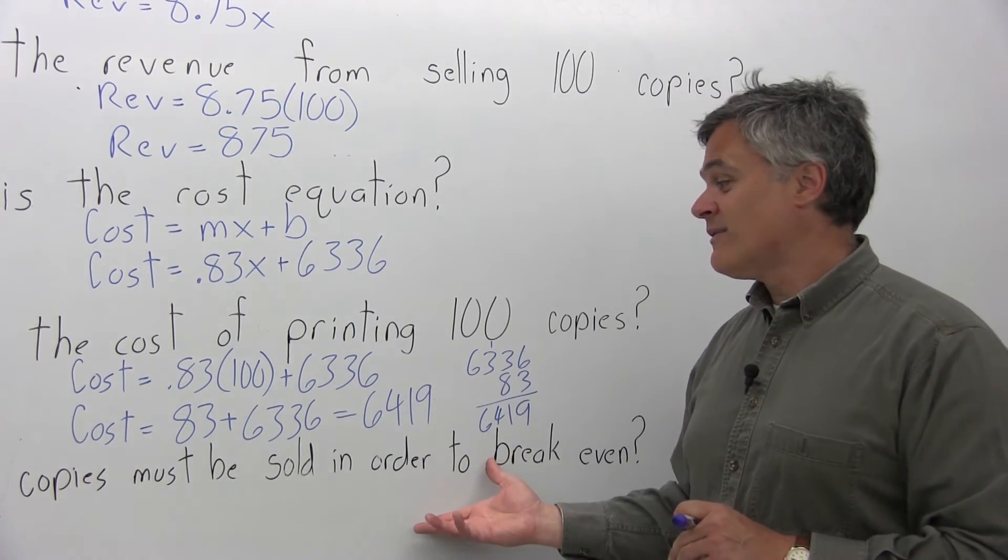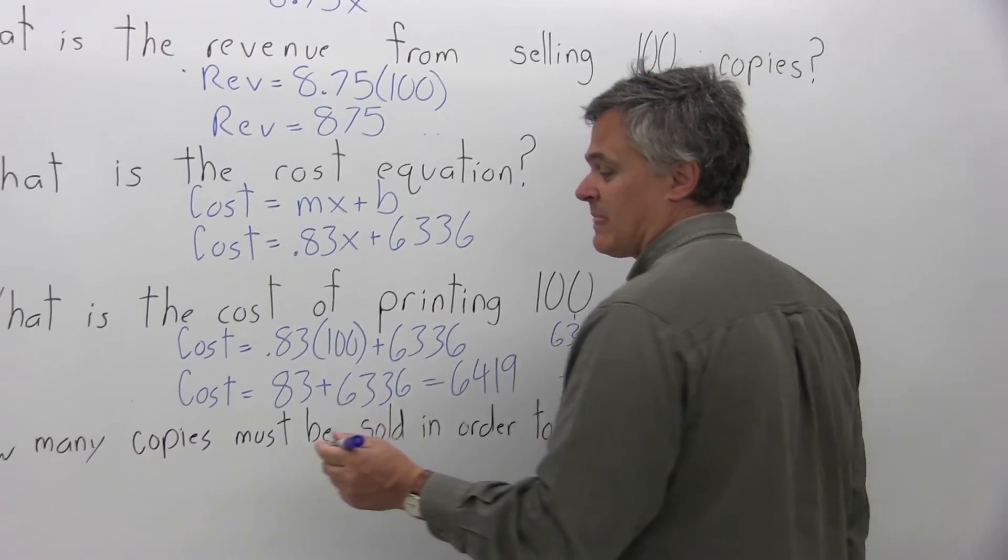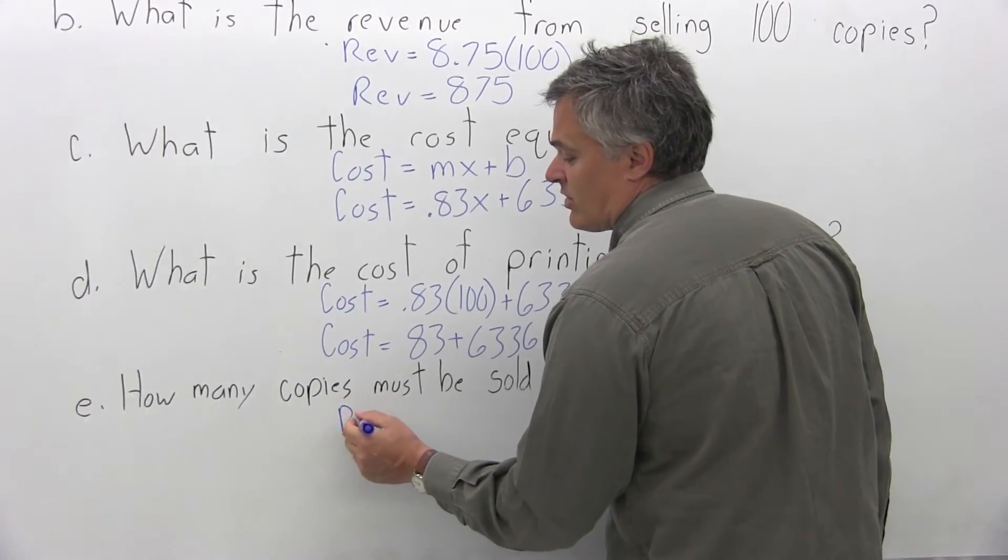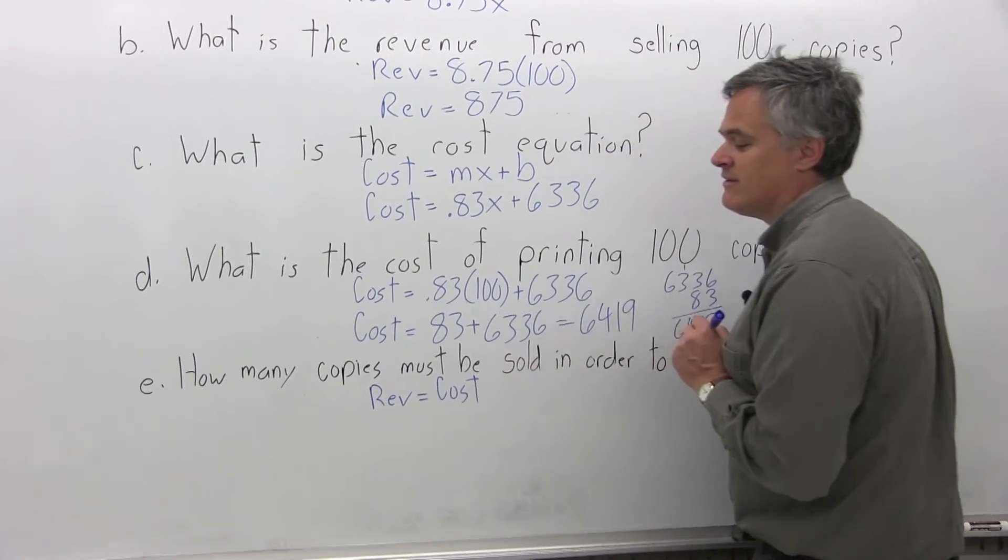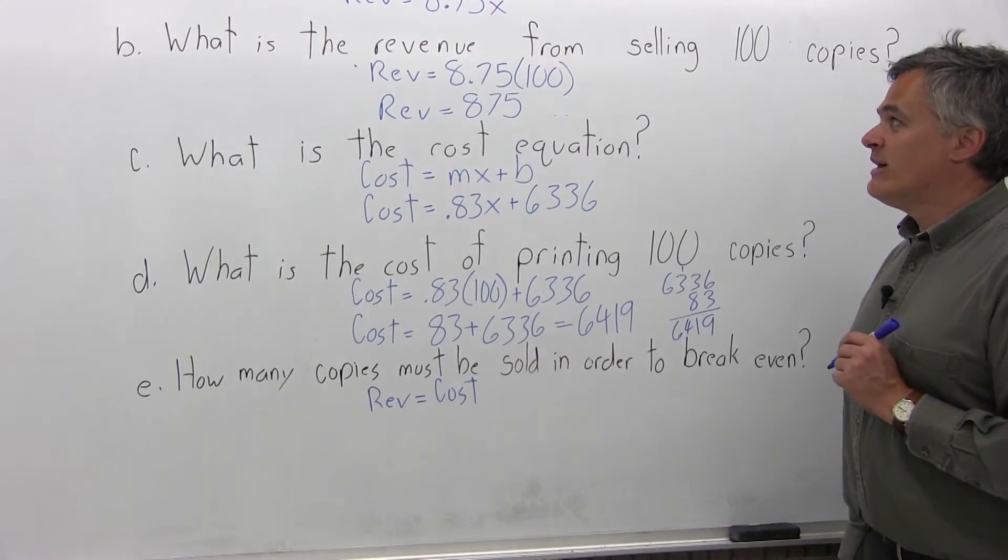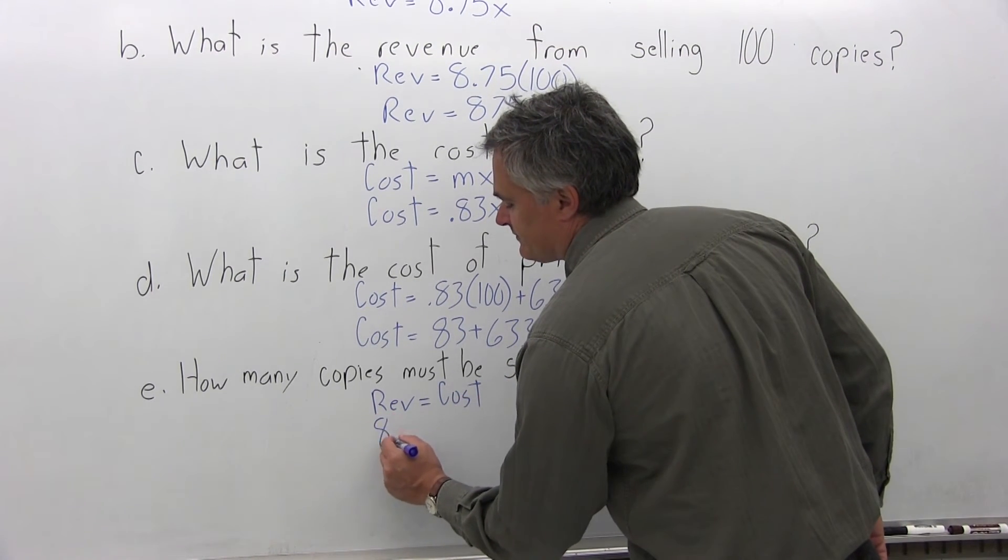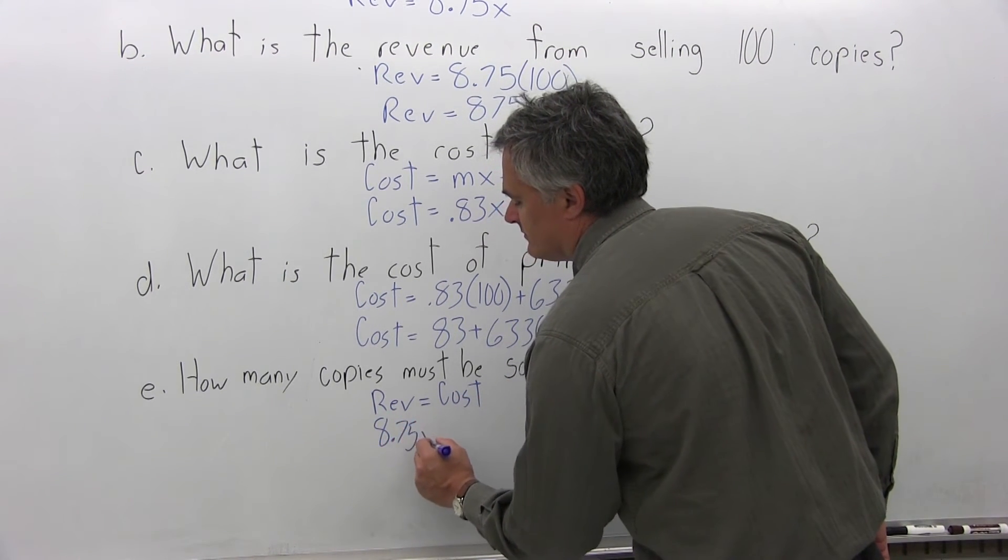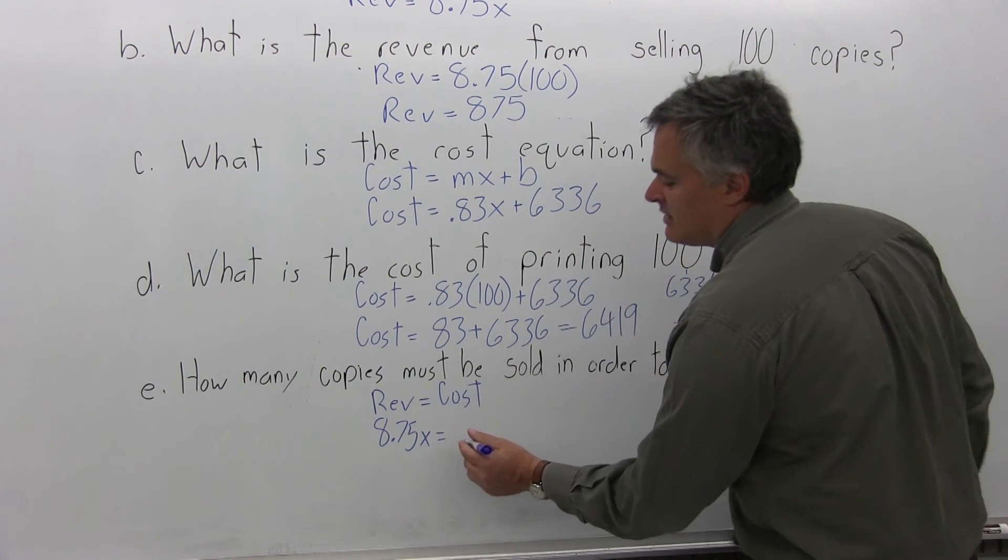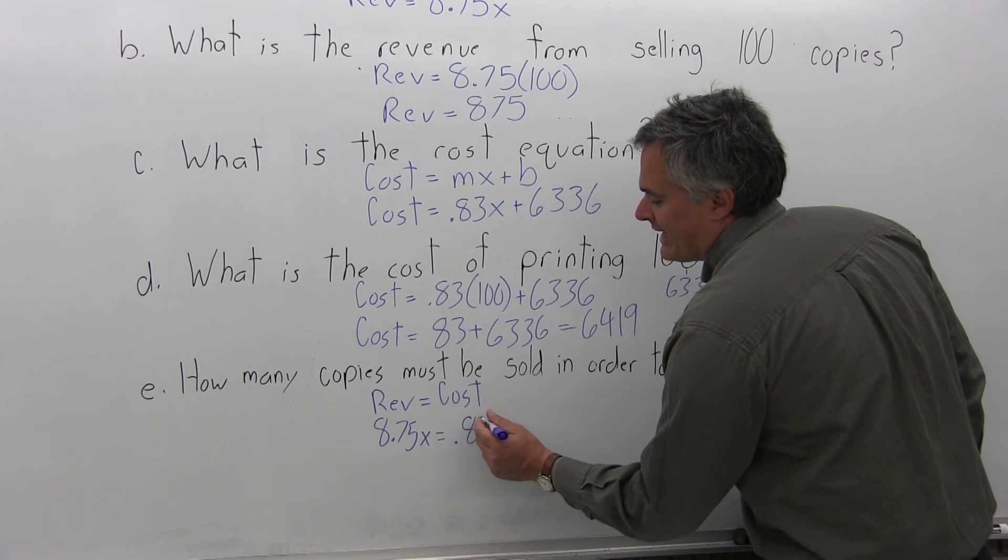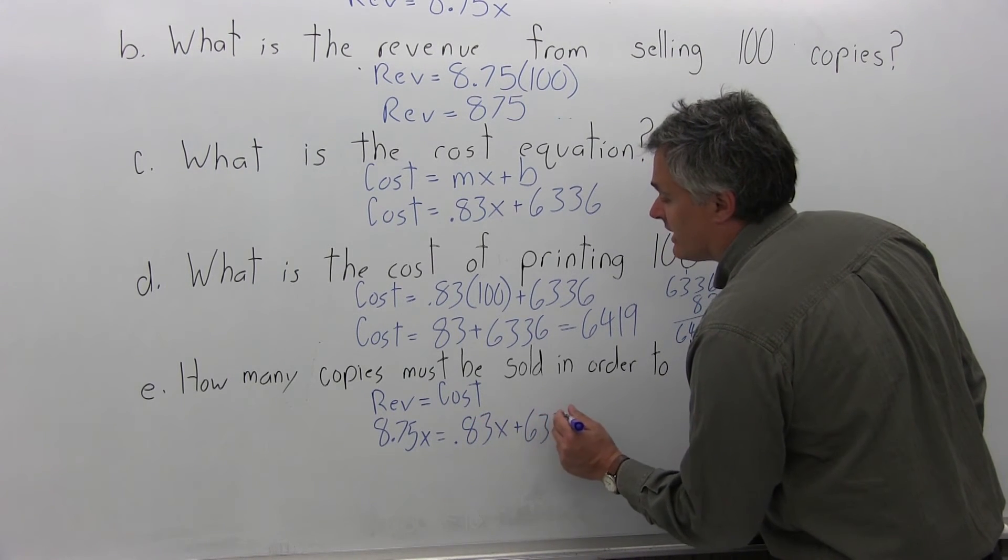Part E, the final part of this question is how many copies must be sold in order to break even? Break even occurs when the revenue is equal to the cost. The revenue from part A is 8.75X. Where is that equal to the cost? The cost from part C is .83X plus 6,336.